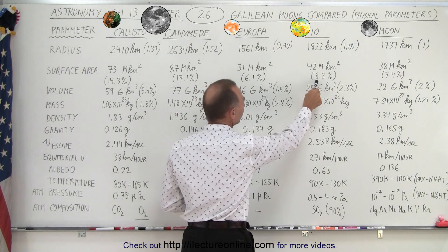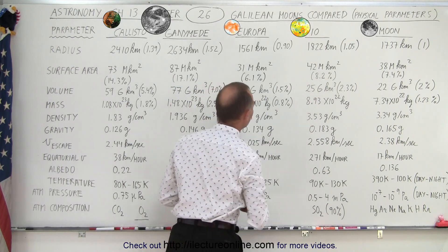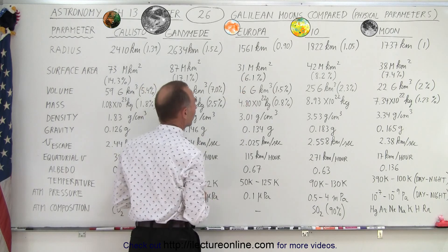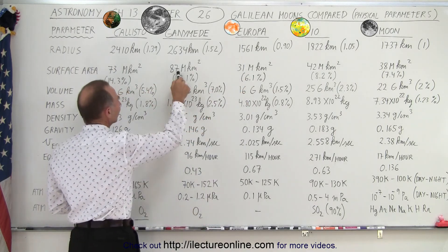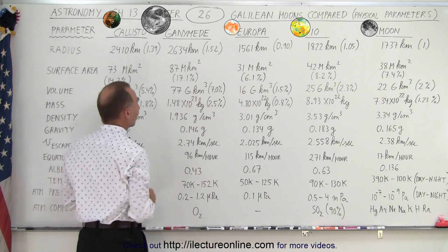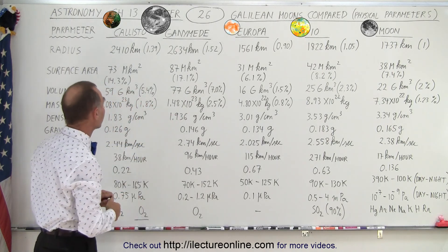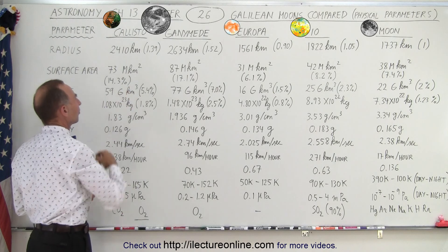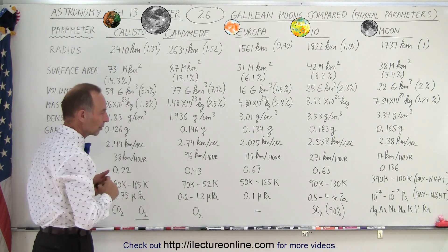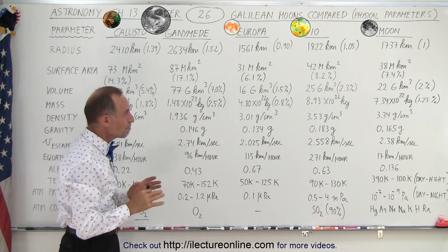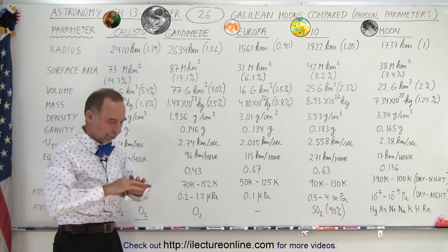For Io, it's 8.2% of the Earth, 42 million square kilometers. 31 million square kilometers for Europa which is 6.1%. 87 million square kilometers which is 17% of the surface of the Earth, which is the largest moon in the solar system, and then Callisto is not far behind at 73 million square kilometers. Notice those numbers, millions of square kilometers for surface area.